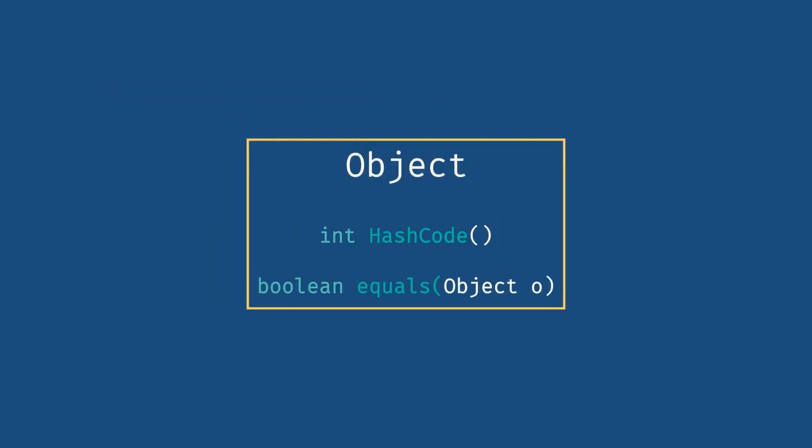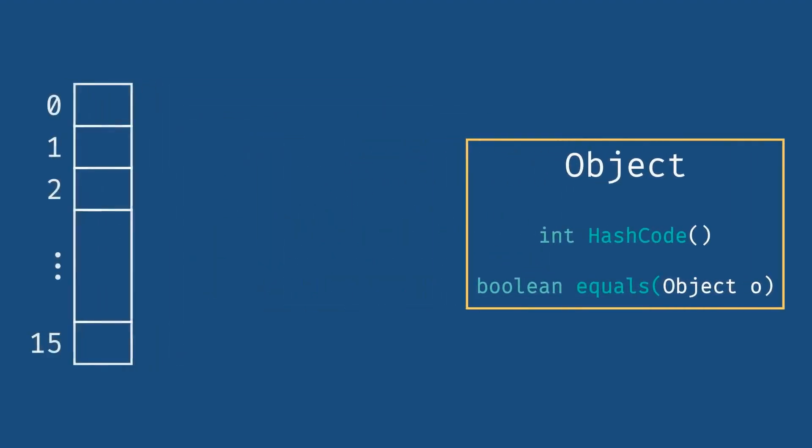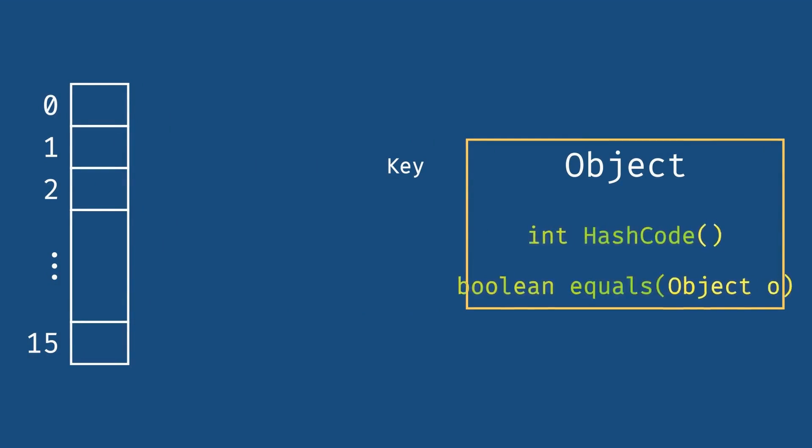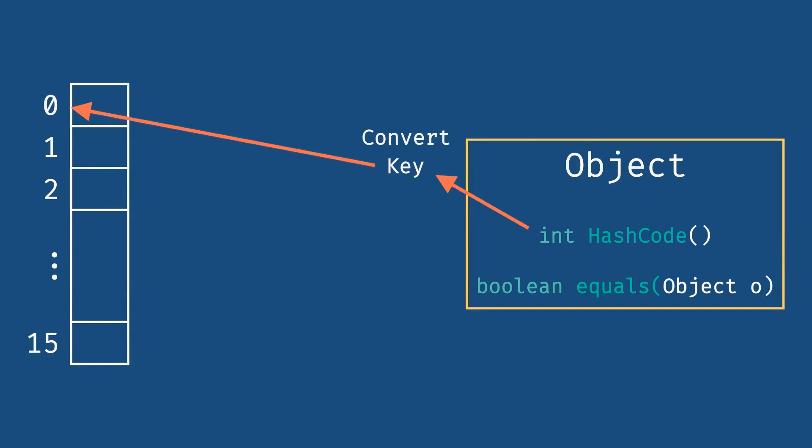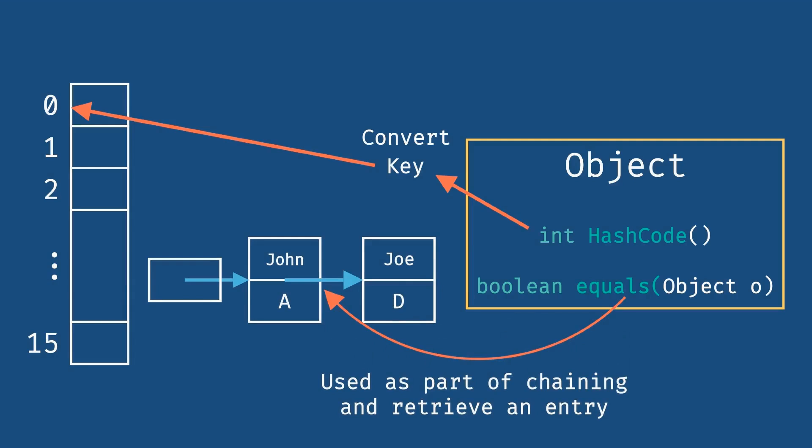So this is why every key on a hash map needs to implement the equals and hash code. The hash code is part of the hash function that converts the key value to an index on the array of buckets. The equals method is used as part of chaining to resolve collisions when you have different keys indexing onto the same slot.